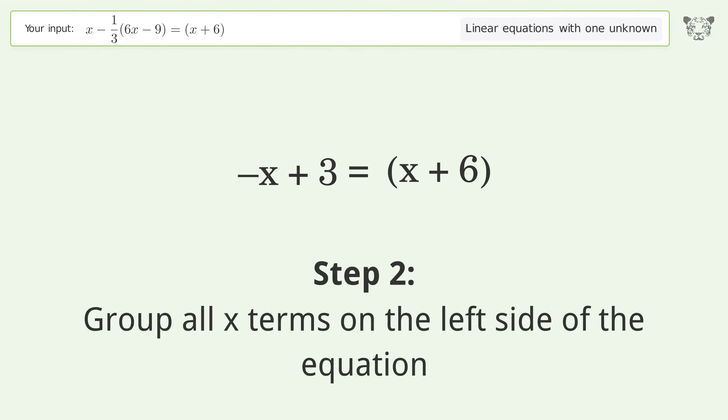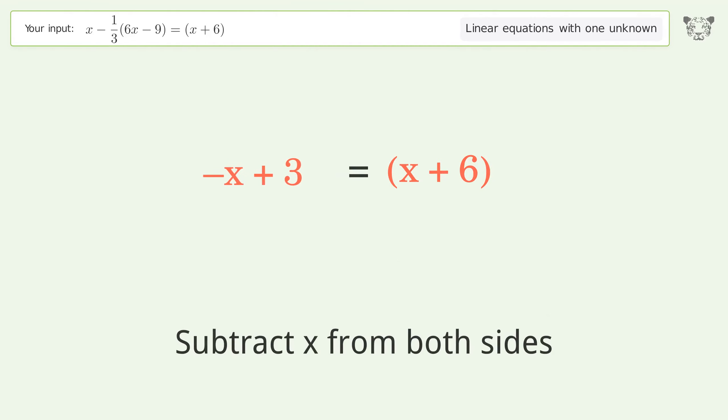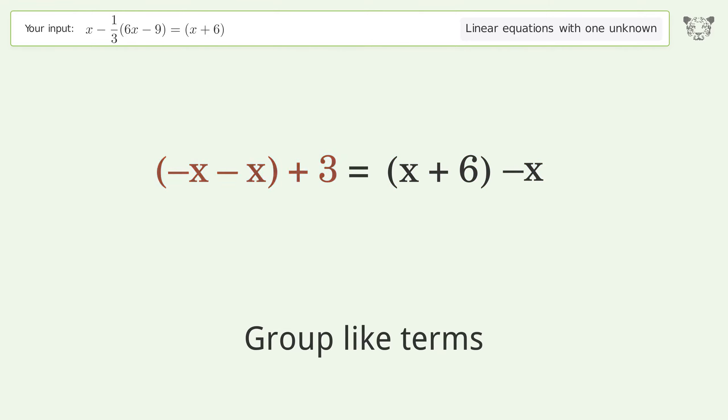Group all x terms on the left side of the equation. Subtract x from both sides. Group like terms. Simplify the arithmetic.